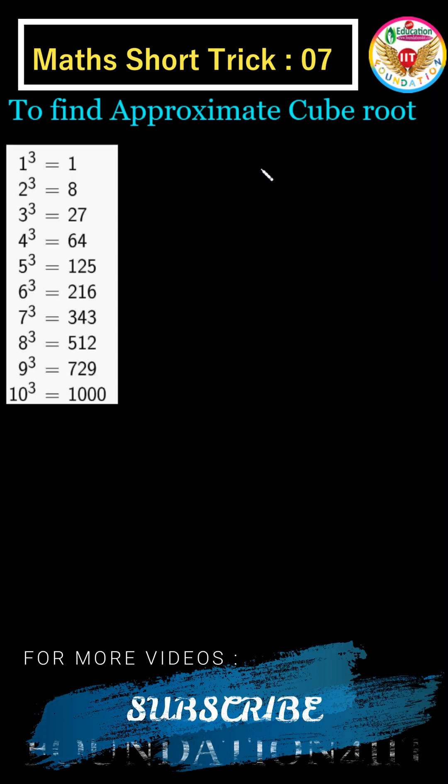To find approximate cube root which are not perfect cubes, we can use this technique. 1 cubed is 1, 2 cubed is 8, you know this pattern.